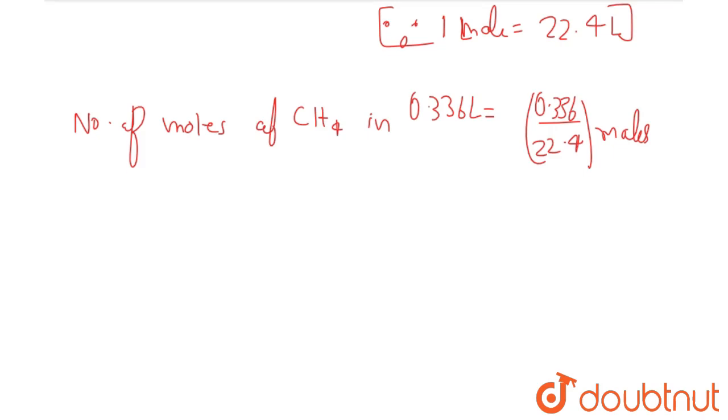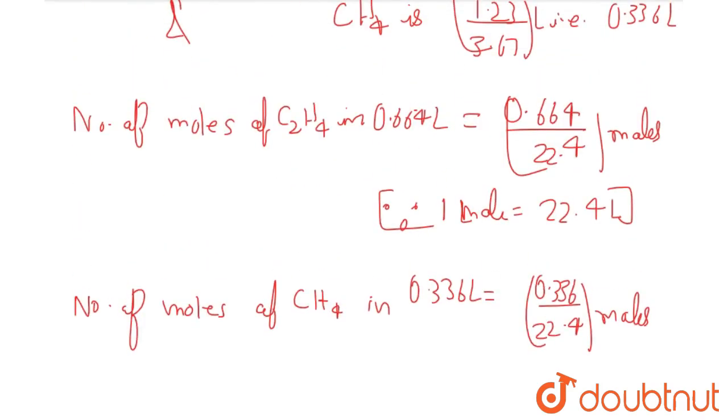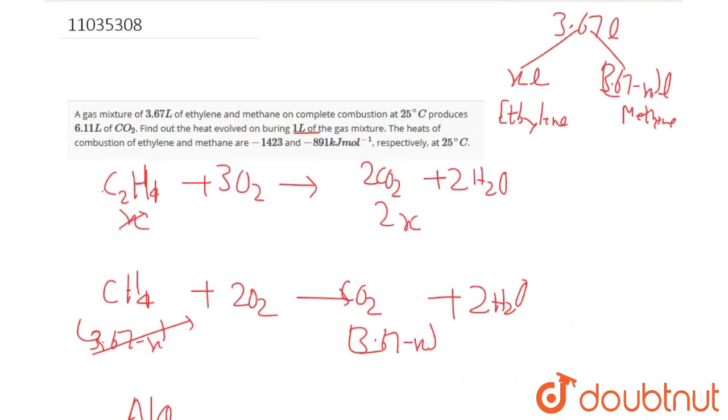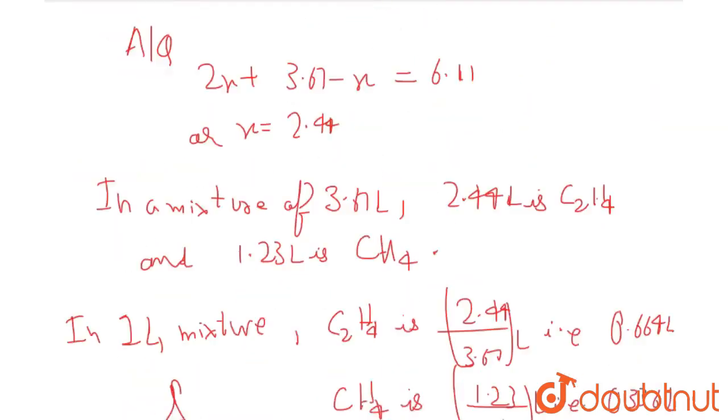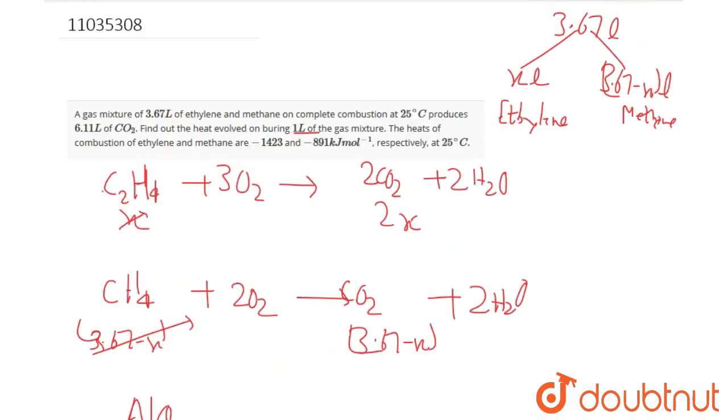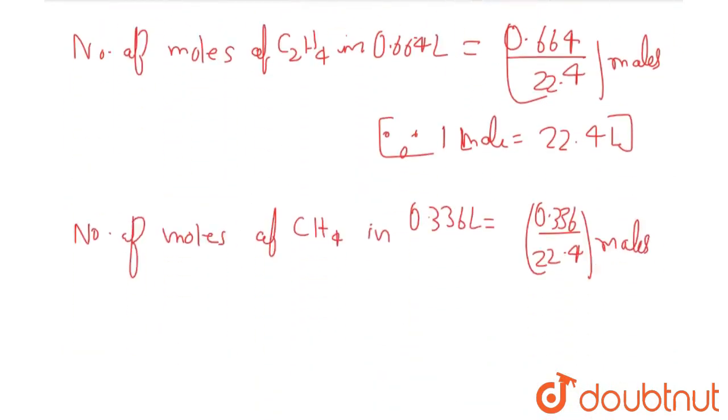We have the respective moles of C2H4 and CH4. For ethylene, 1 mole produces 1,423 kJ, and for methane, 1 mole produces 891 kJ.